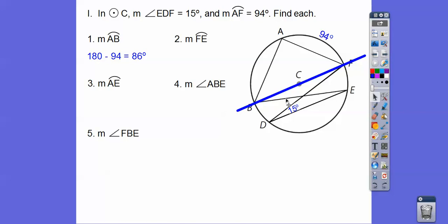So it says find this arc right here, AB. So it's 180 minus the 94, 86. Find FE. FE is twice that 15, so it's 30. Find arc AE. So AE is going to be 94 plus 30, 124.